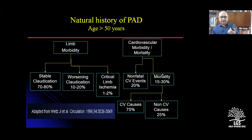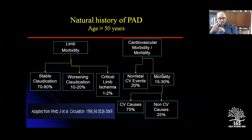The natural history of PAD is described in an interesting long-period study with each arm having more than 1,000 people, published in Circulation magazine. Limb morbidity and cardiac morbidity were assessed, analyzed every five years: stable claudication, worsening claudication, critical limb ischemia, non-fatal events, mortalities, cardiovascular causes, and non-cardiovascular causes were all analyzed.